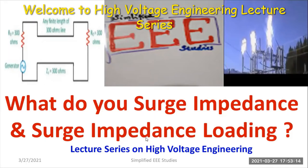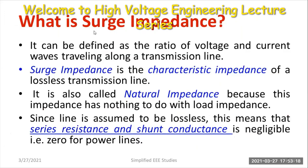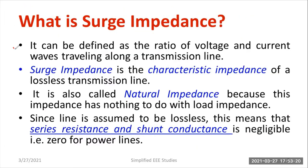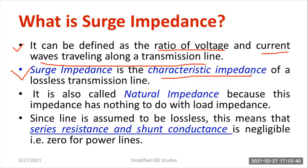Now let us try to understand what is meant by surge impedance. First and foremost, I would like to discuss the definition. It can be defined as the ratio of voltage and the current waves traveling along the transmission line, or you can say it is the ratio of voltage and current of a traveling wave. Surge impedance is also known as characteristic impedance.